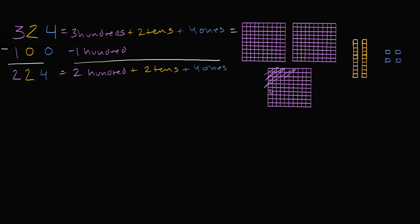And if you think about it in this picture, I took away one group of a hundred right over there. And what am I left with? I'm left with two hundreds, two tens — that's the two tens there — and four ones. Two hundreds, two tens, four ones, or two hundred and twenty-four.